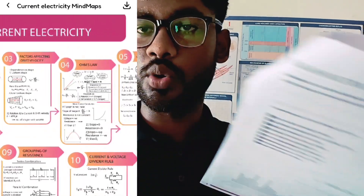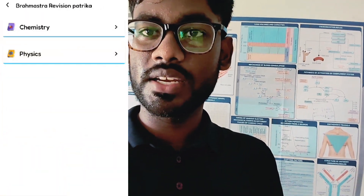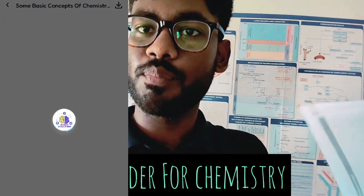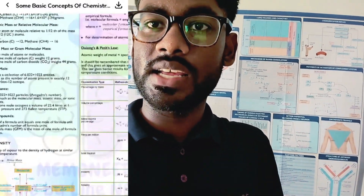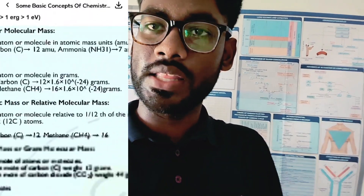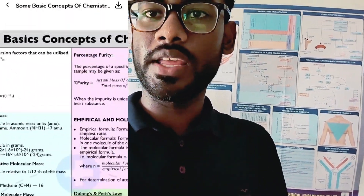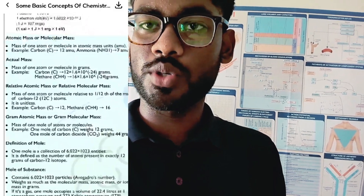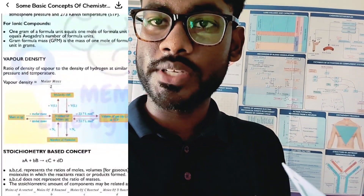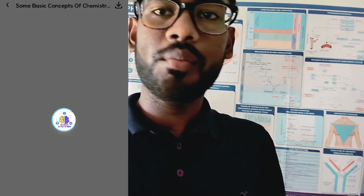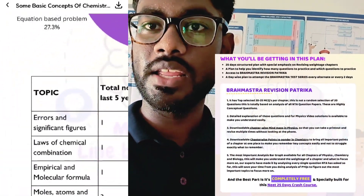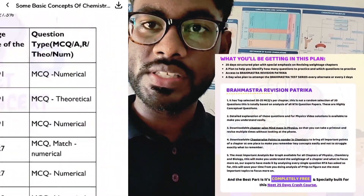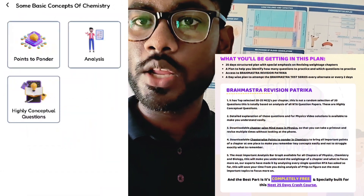You can solve previous year questions (PYQs). You can open the mind maps for chemistry. You can read and check the previous questions — it is very useful. Brahmastra revision contains 20-25 questions per chapter. Each chapter is topic-wise. You can see the last five years of questions. In physics and chemistry, you can read the various questions to understand what kind of questions appear.